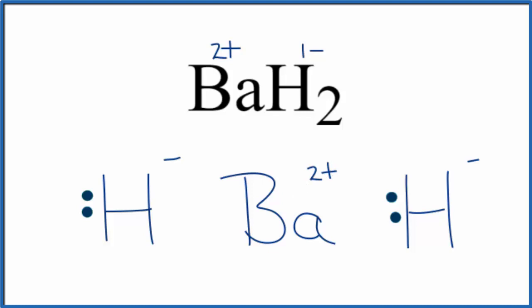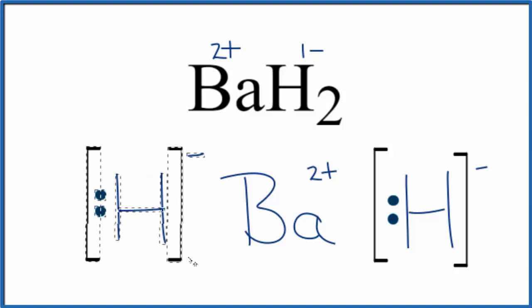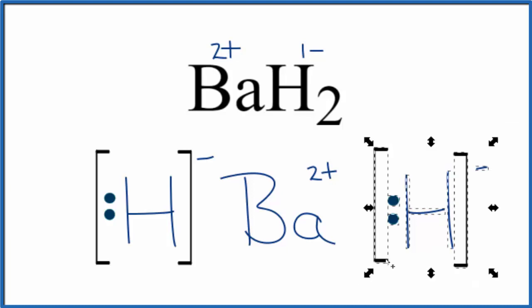To show that the electrons were transferred, not shared, we're going to put brackets around each hydrogen. Sometimes you'll also see brackets around the barium ion. Now we have these negative ions and that positive barium ion. The negative and positive charges attract, and that forms the ionic bond between the hydrogen and the barium.